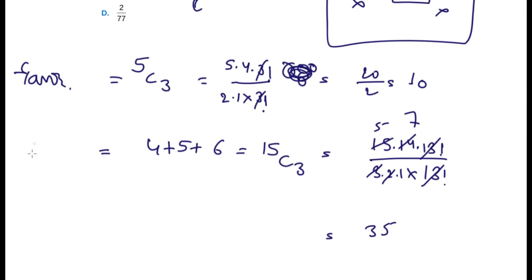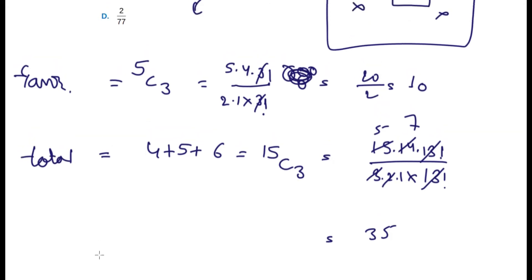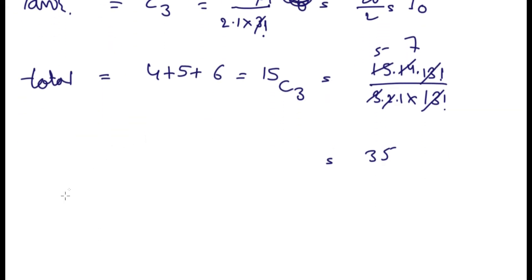So 14 divided by 2 is 7, giving us 35. Okay, we are at 35. Now let's find out the probability. This was total cases, so our probability P will be favorable upon total cases.